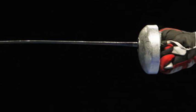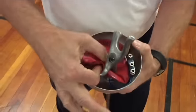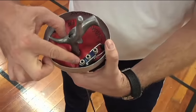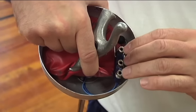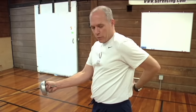It comes out the other side of the bell guard and you can see those wires right there and connects to this socket. This socket is then connected to a body cord which will run up the sleeve underneath the jacket and out the back.